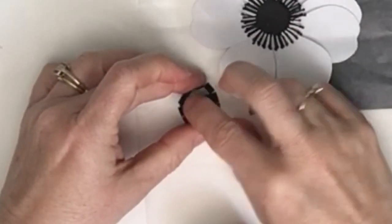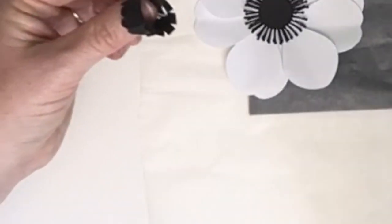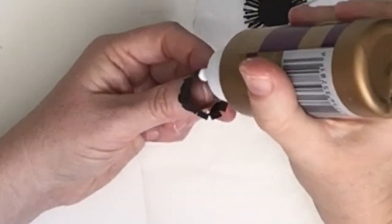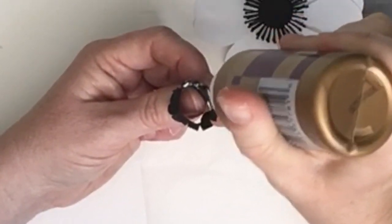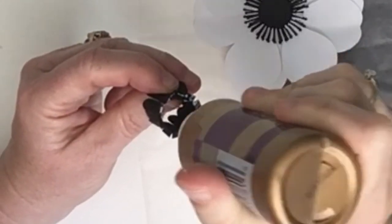Then I pressed the little scallops on the top towards the center to make sort of a little dome shape for the center. Put some glue on these little flaps that I flattened out and glued it to the center. I just used a pencil to kind of push it down and hold it in place until the glue dried.